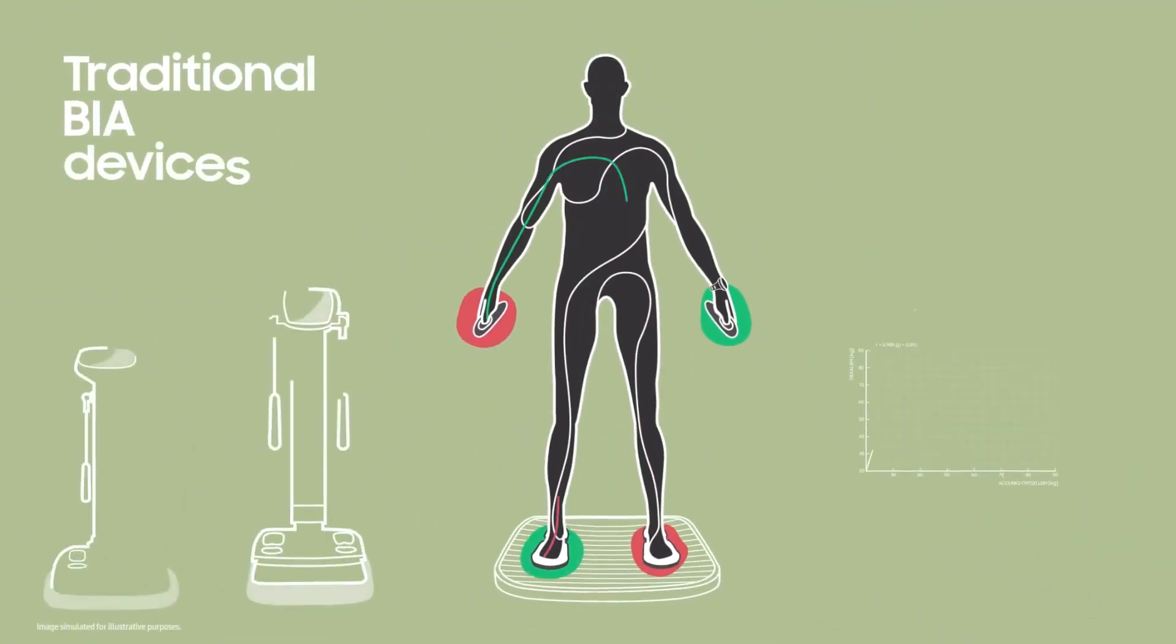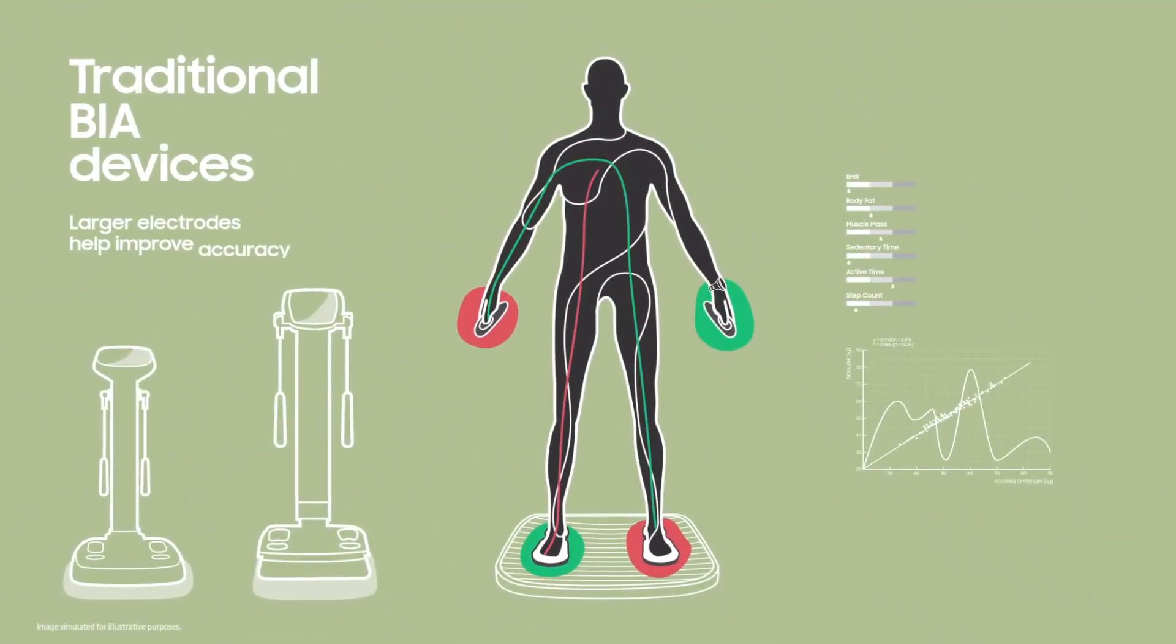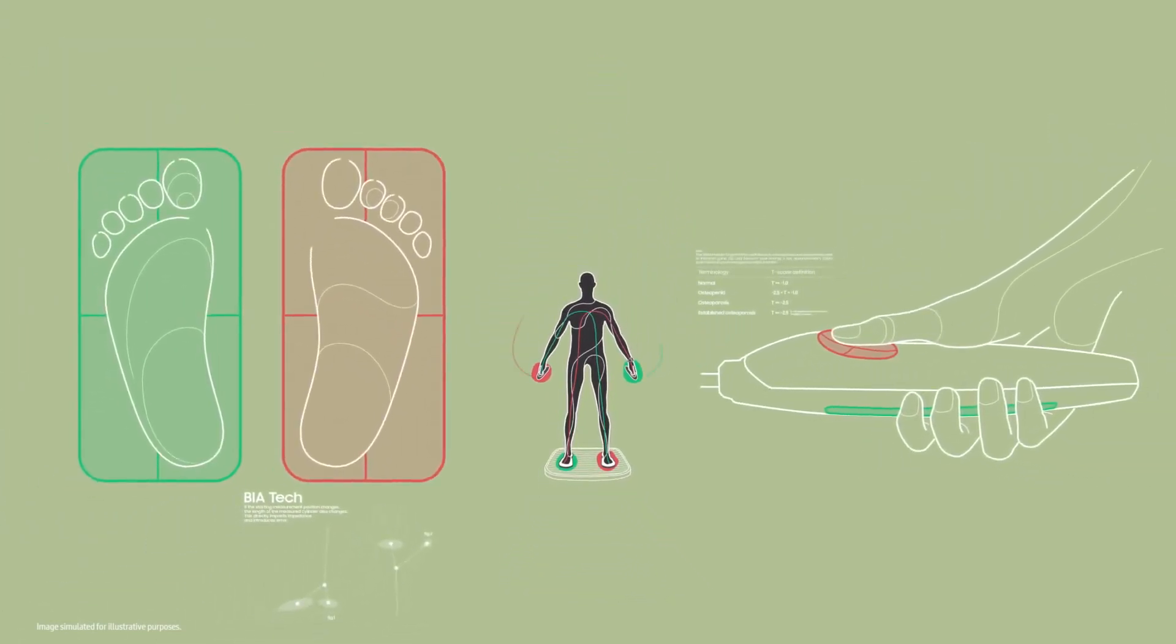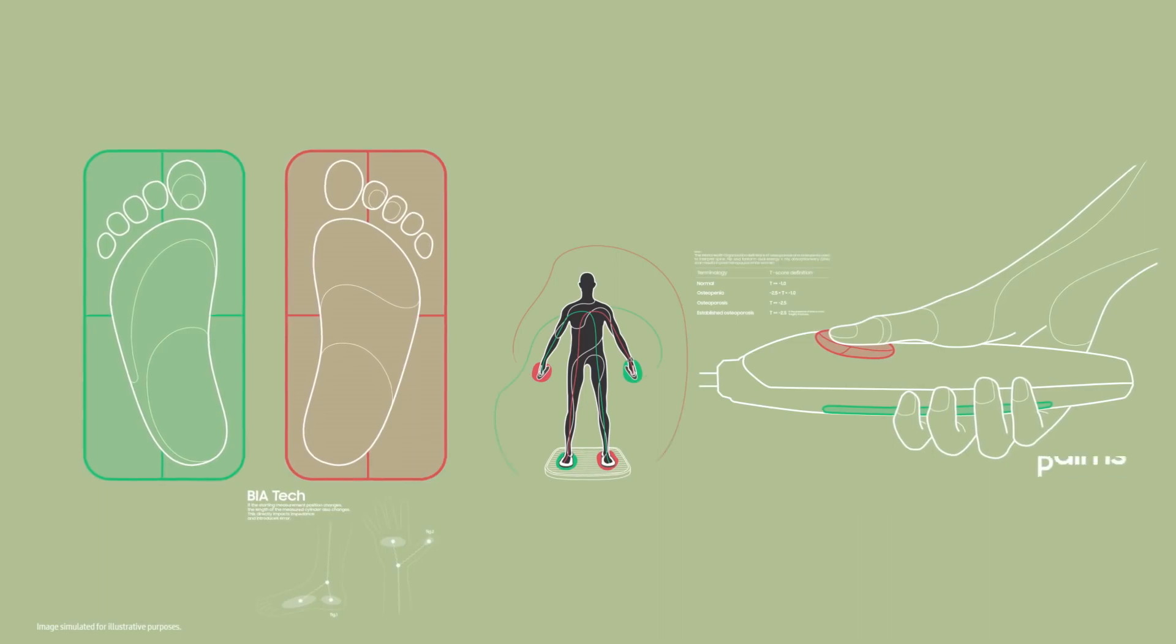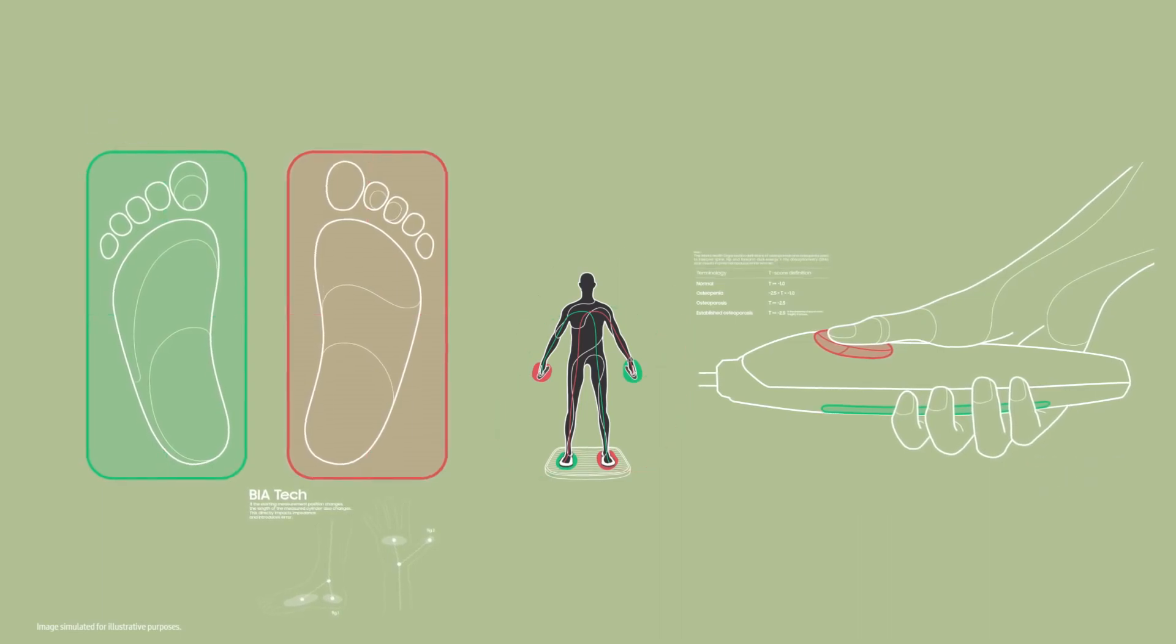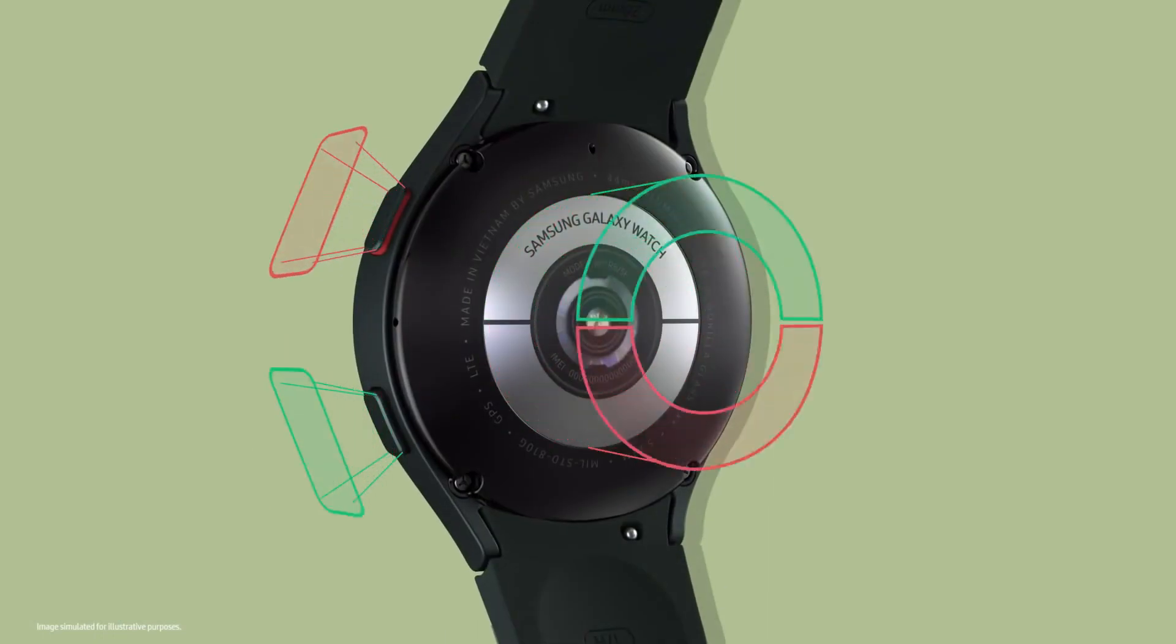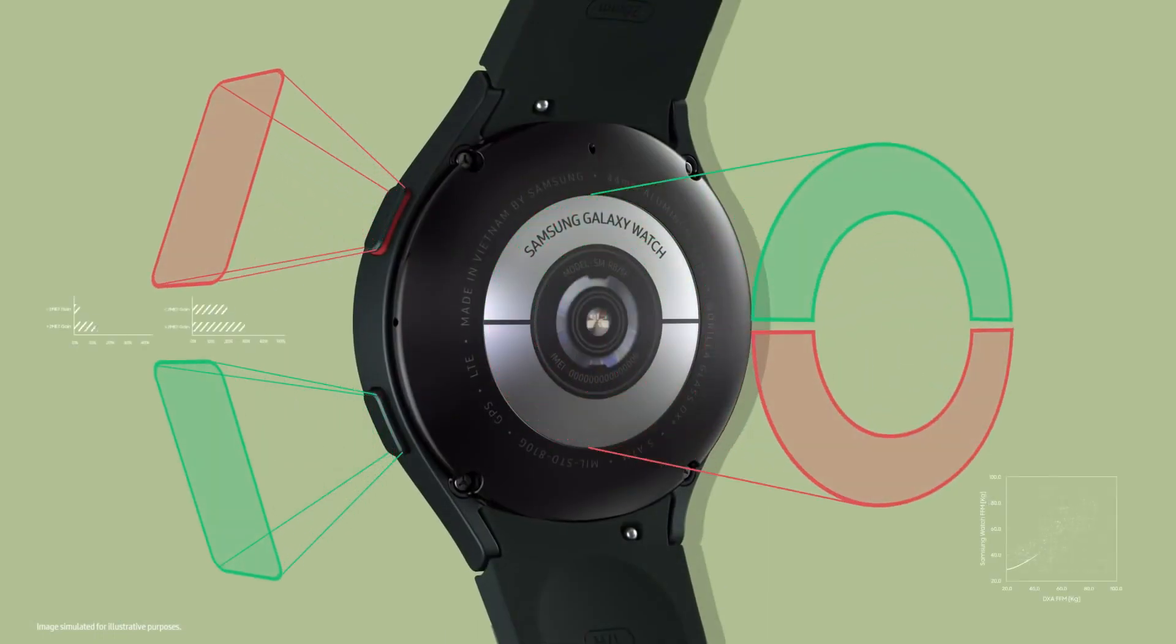Most body composition analyzers have large electrodes that help improve accuracy by reducing contact impedance with the skin. That's why these devices use our palms and the soles of our feet for readings. But in order to include electrodes in the Galaxy Watch, we needed to drastically reduce the size of the electrodes without sacrificing accuracy.